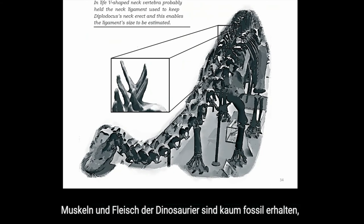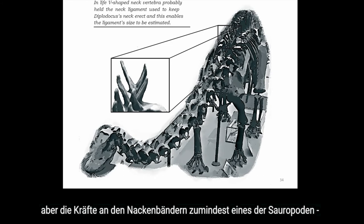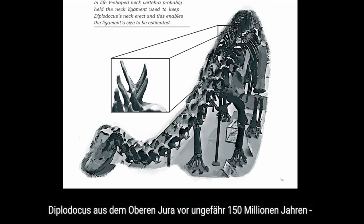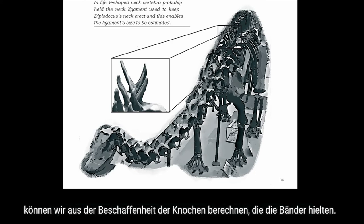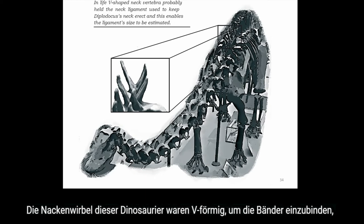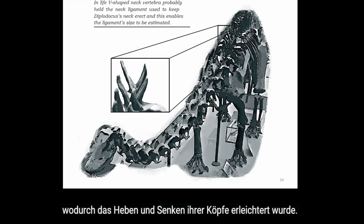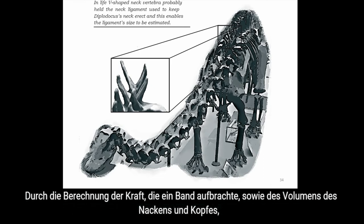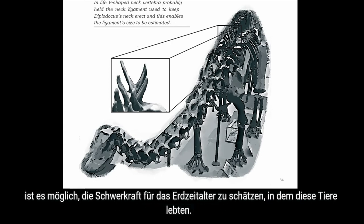Dinosaurs' muscles and flesh have hardly ever been fossilized, but the forces in the neck ligaments of at least one sauropod — Diplodocus, from the upper Jurassic of about 150 million years ago — can be calculated from the shape of the bones which held the ligament. The neck bones of these dinosaurs are V-shaped to contain a ligament helping to raise and lower their heads. By calculating the force that this neck ligament was likely to exert and estimating the volume of the neck and head, it is possible to estimate the force of gravity when these animals were alive.